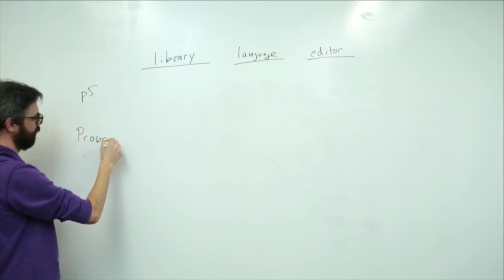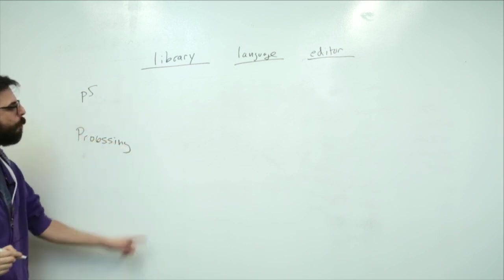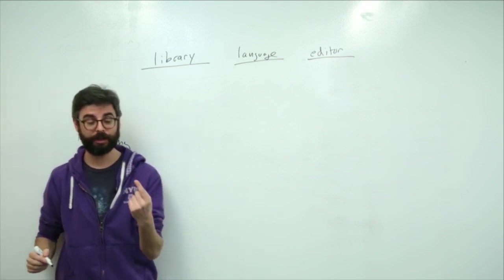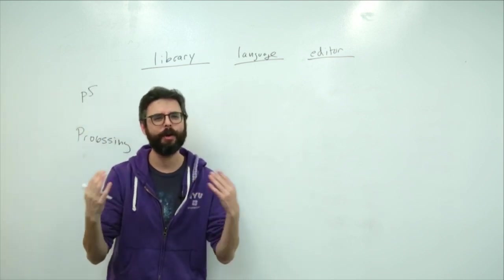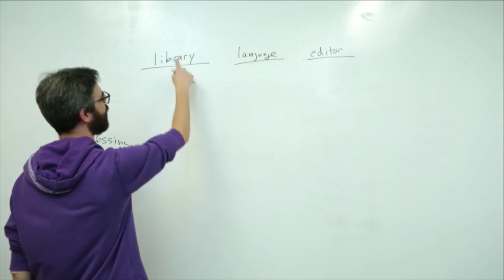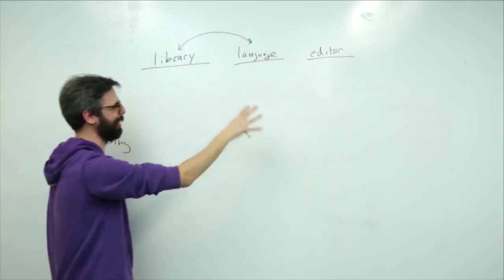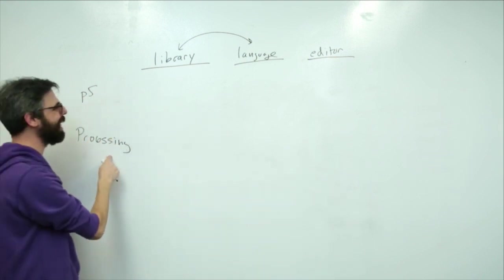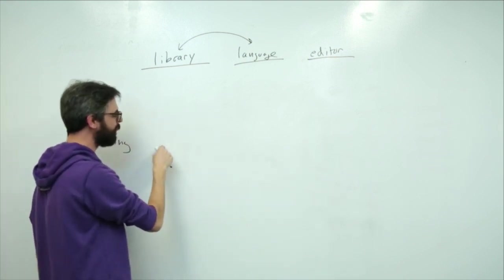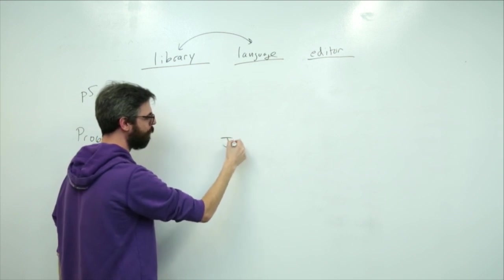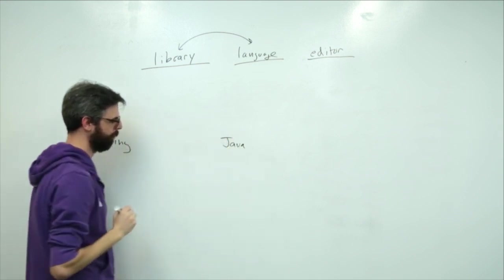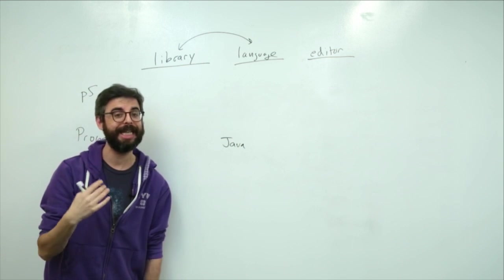Let's think about these three categories for a second. So p5 and Processing, let's start with Processing. Processing is built, is written, is a library for... these are really kind of one thing, I guess, kind of thinking of two, it's really not three, it's really two.